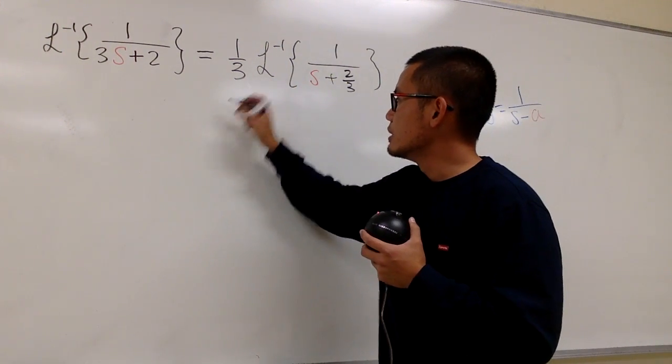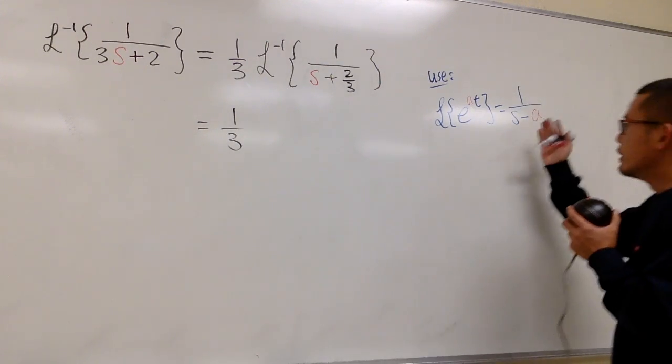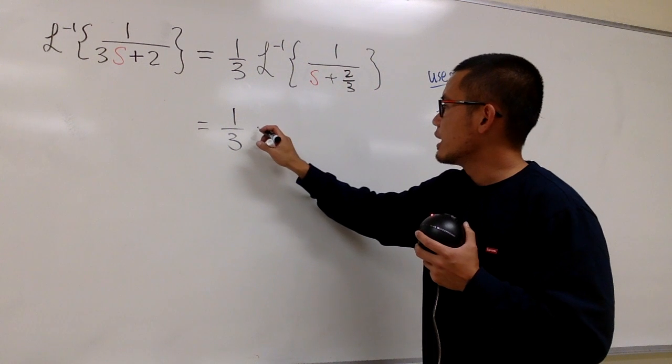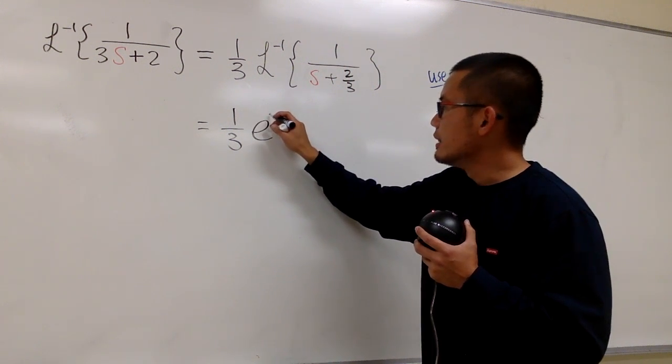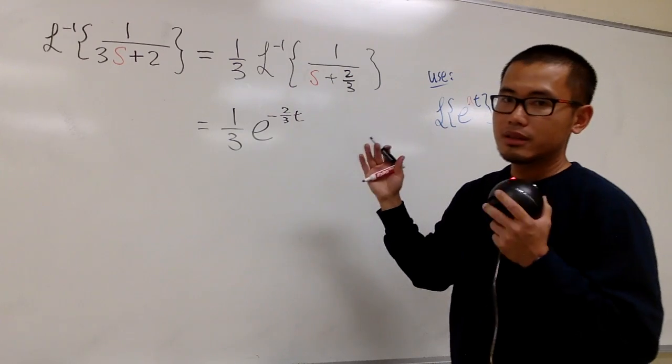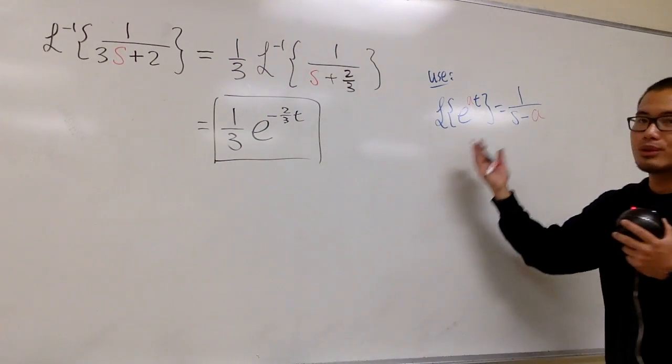Because now I can just tell you, this is equal to 1 third in the front. And looking at this backwards, everything is matched already. Look at this, and you get e to the negative 2 over 3 t. That's it. So once again, utilize this. Thank you.